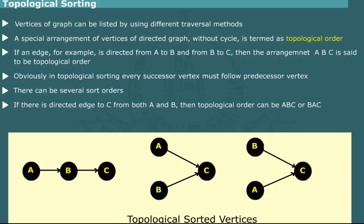For example, if there is a directed edge to C from both A and B, then the topological order can be A, B, C or B, A, C.